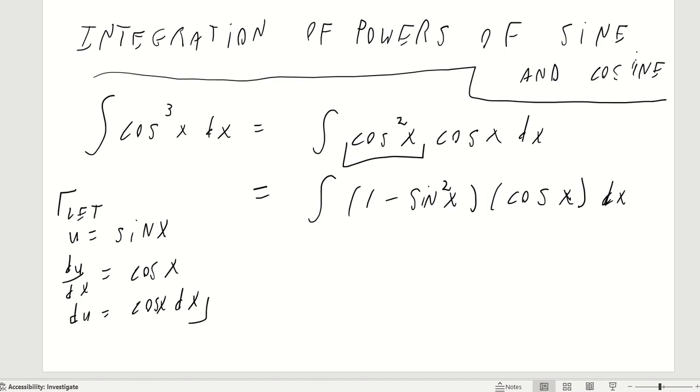So this will be then equal to 1 minus u squared. So as u is equal to the sine of x, then the cosine of x by dx, well, that just equals du. So the substitution has resulted in a simplification of the integrand.